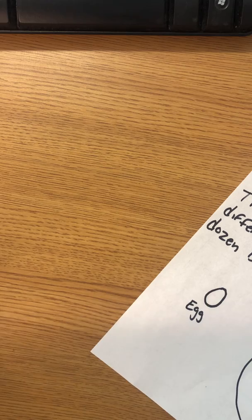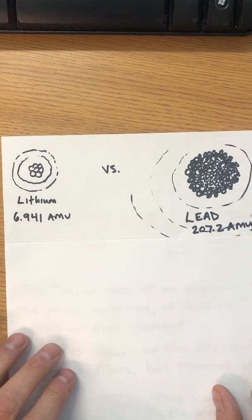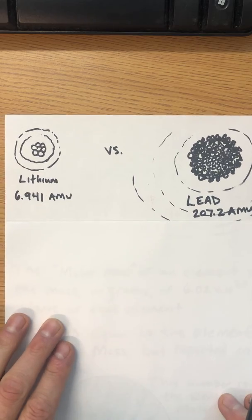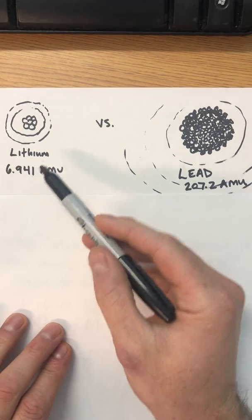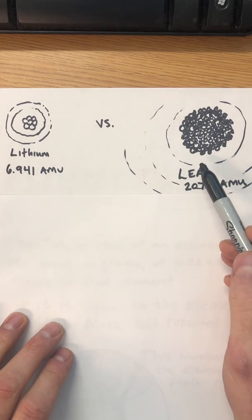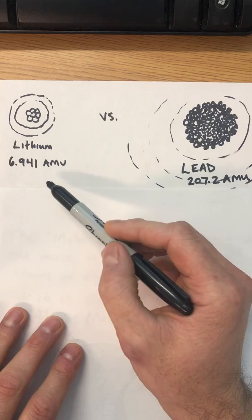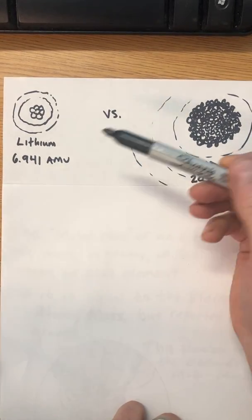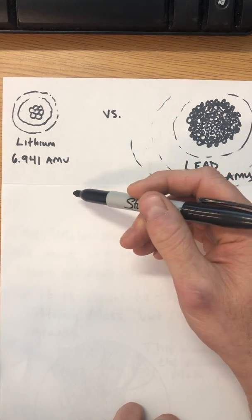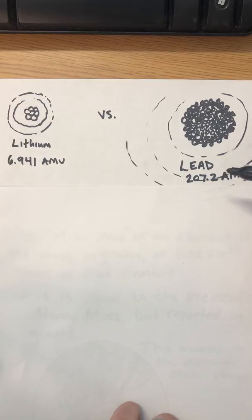So just like you couldn't really equate the number of grams of eggs to bowling balls, like lithium atoms, for example, are so much smaller than lead atoms that if you had a dozen lithium atoms, it would have a much smaller mass. Each lithium atom is only 6.941 on average atomic mass units, where a lead is this big fat heavy atom at 207.2 atomic mass units.